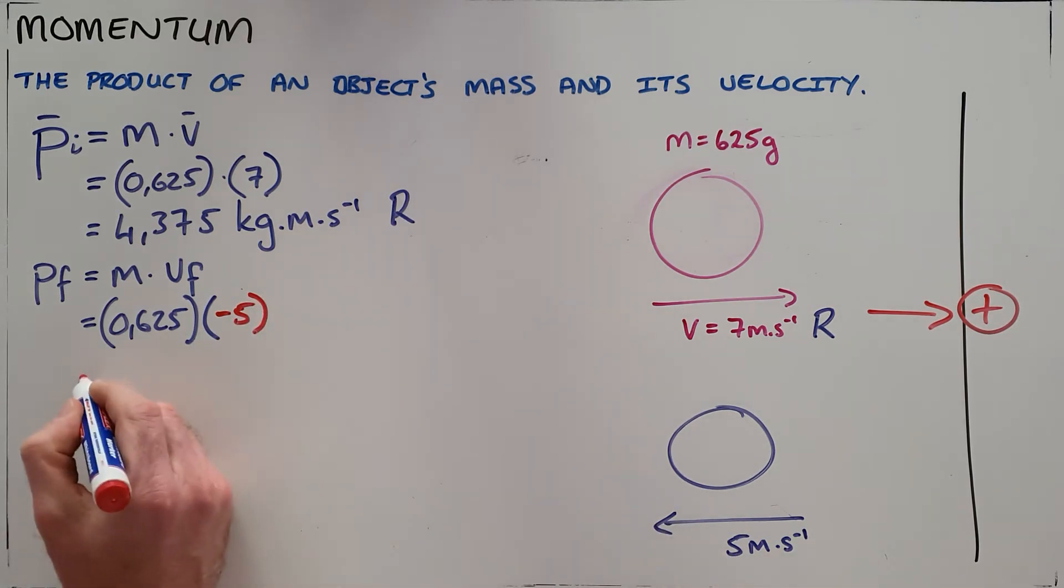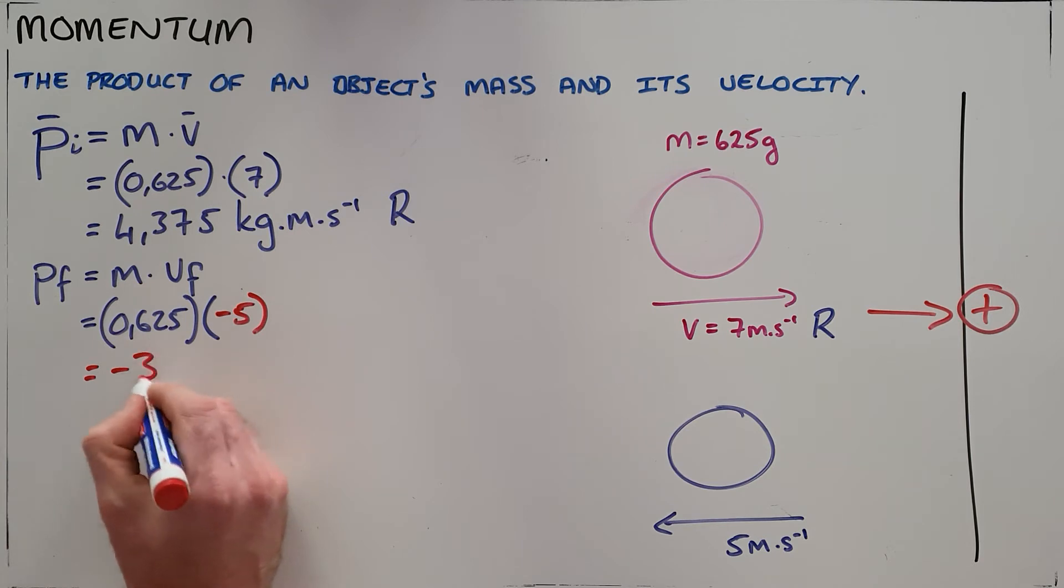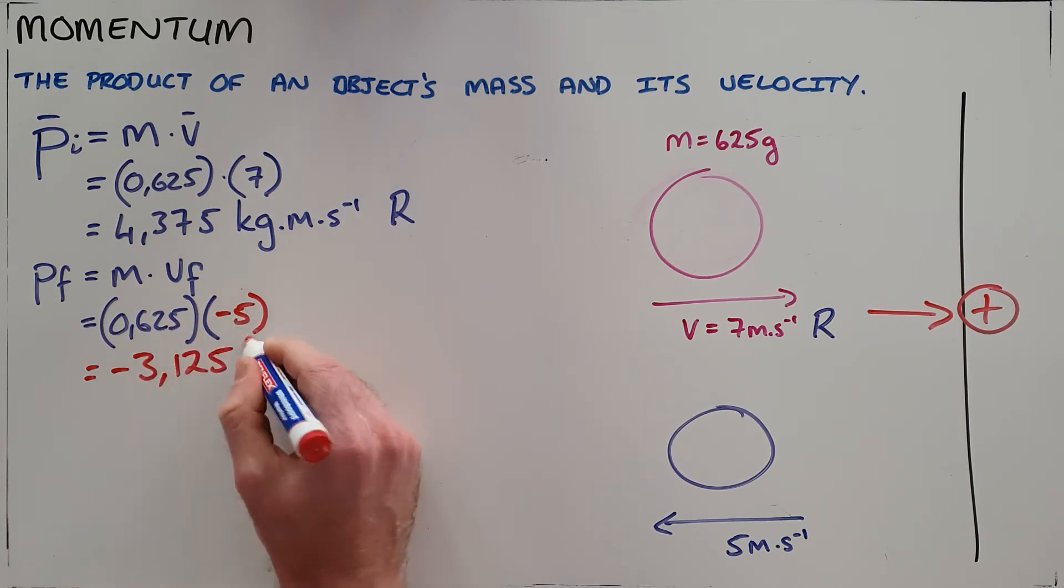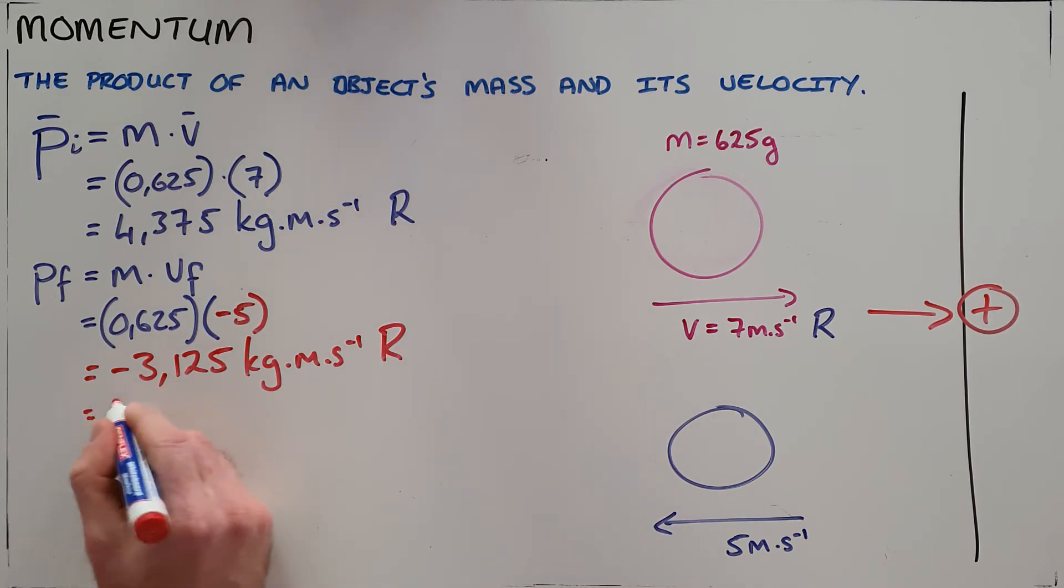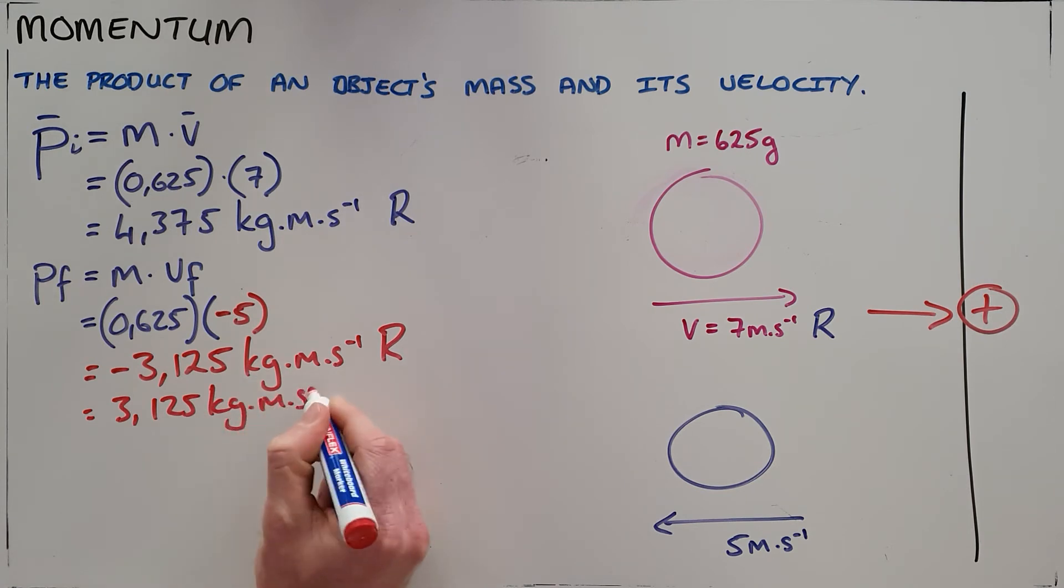Which tells us that the final momentum is then either negative 3.125 kilogram meters per second to the right. Or we can simplify that because negative right is then just 3.125 kilogram meters per second to the left. And we always prefer to leave our answers in a positive form.